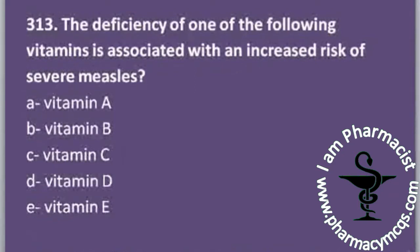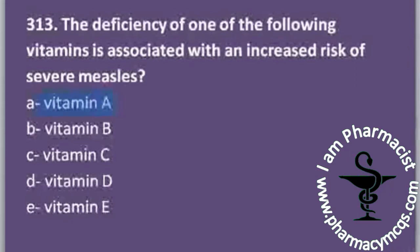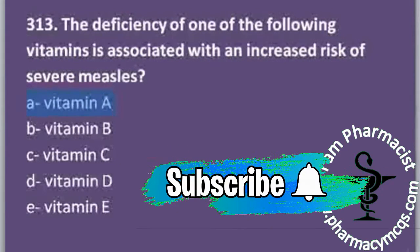The next MCQ is again a biochemistry question: the deficiency of which vitamin is associated with an increased risk of severe measles? Options are vitamins A, B, C, D, and E. Skin conditions are usually associated with deficiency of vitamin A, so vitamin A deficiency is associated with increased risk of severe measles.